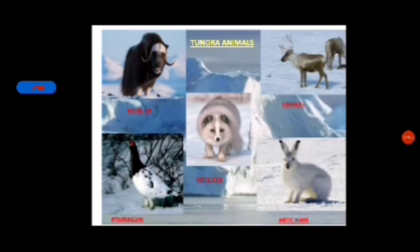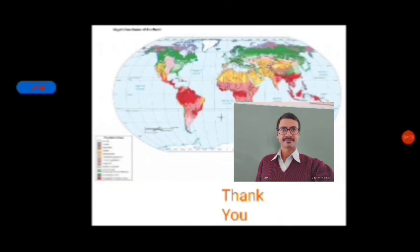The tundra wildlife includes animals having fur and a thick layer of fat to conserve body heat and survive in the extremely cold climate. Land animals include reindeer, muskox, polar bear, fox, dog, wolf, etc., found in this region. I hope you understand the chapter. Thank you.